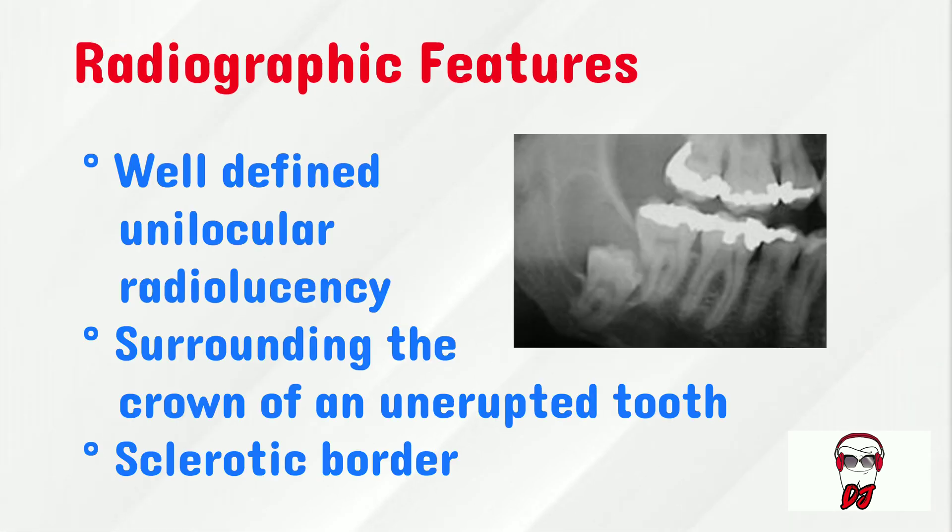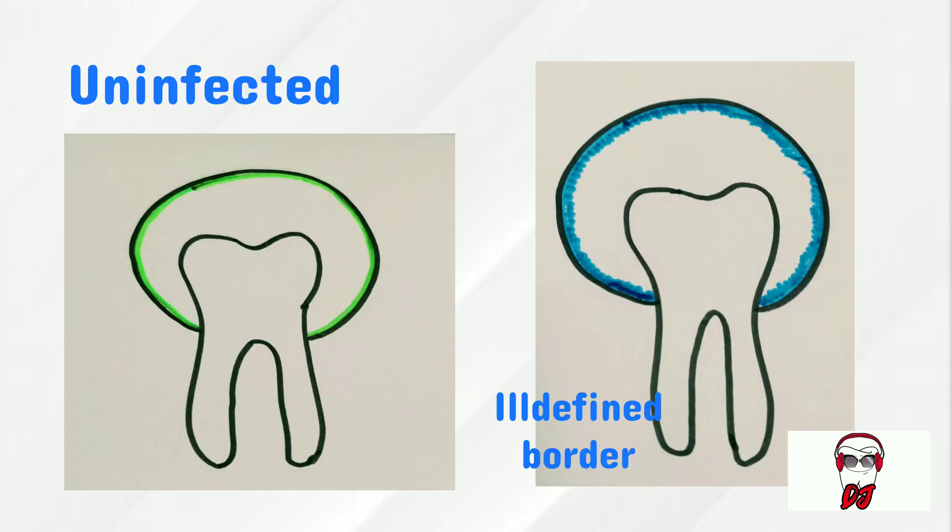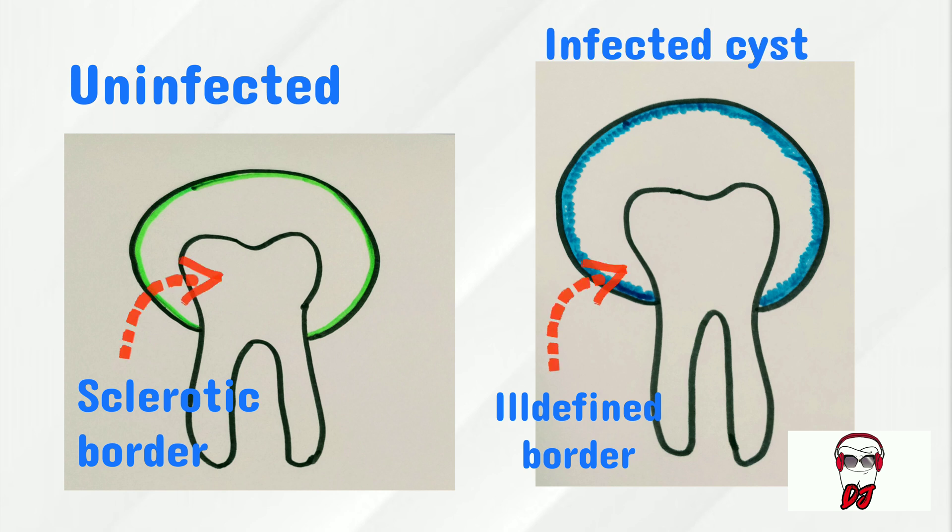So let's move on to my radiographic features. In a small cyst, you will see a well-defined unilocular radiolucency surrounding the crown of an unerupted tooth with a sclerotic border. But in infected cases, the border will be ill-defined.